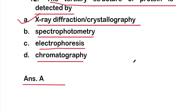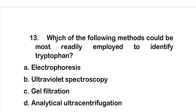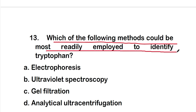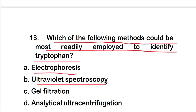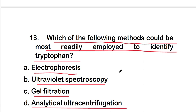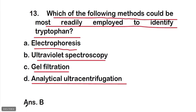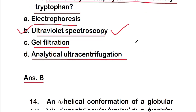Question 13: Which of the following methods could be most readily employed to identify tryptophan? Options: A) electrophoresis; B) ultraviolet spectroscopy; C) gel filtration; D) analytical ultracentrifugation. The right answer is option B — ultraviolet spectroscopy can most readily be employed to identify tryptophan.